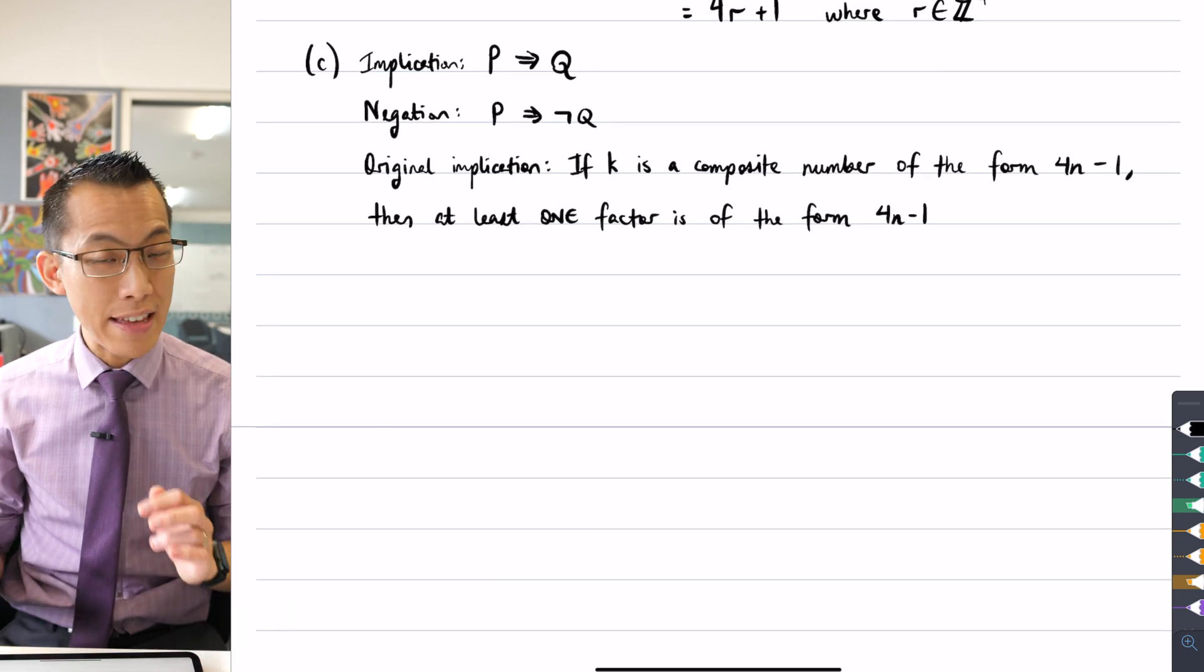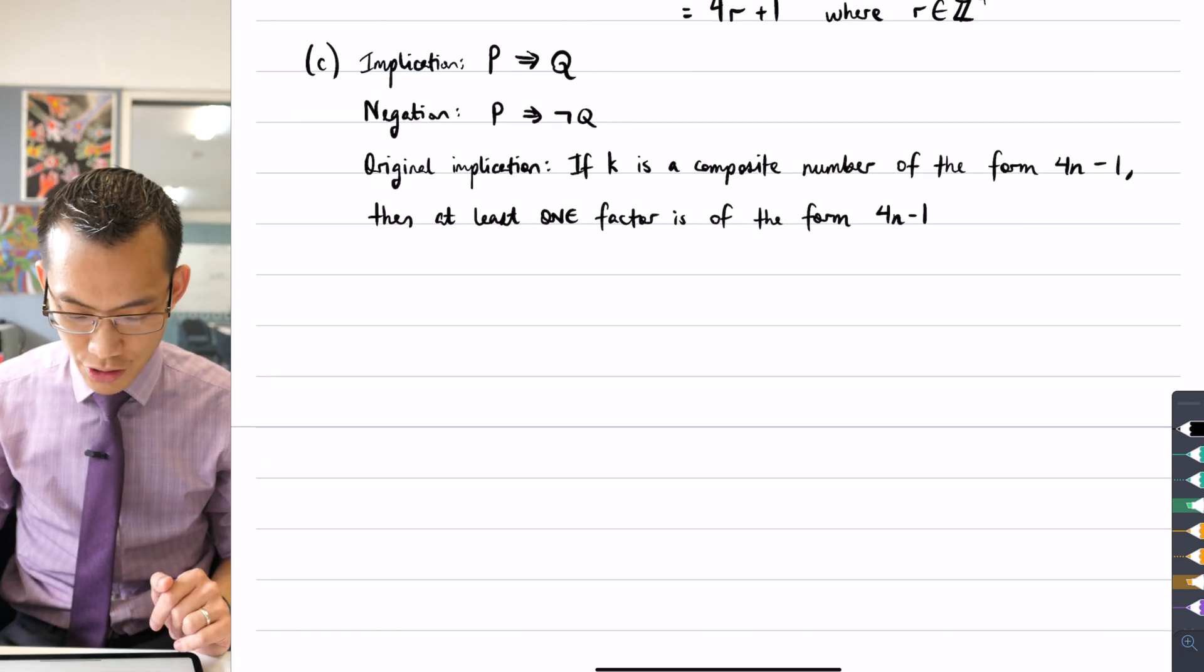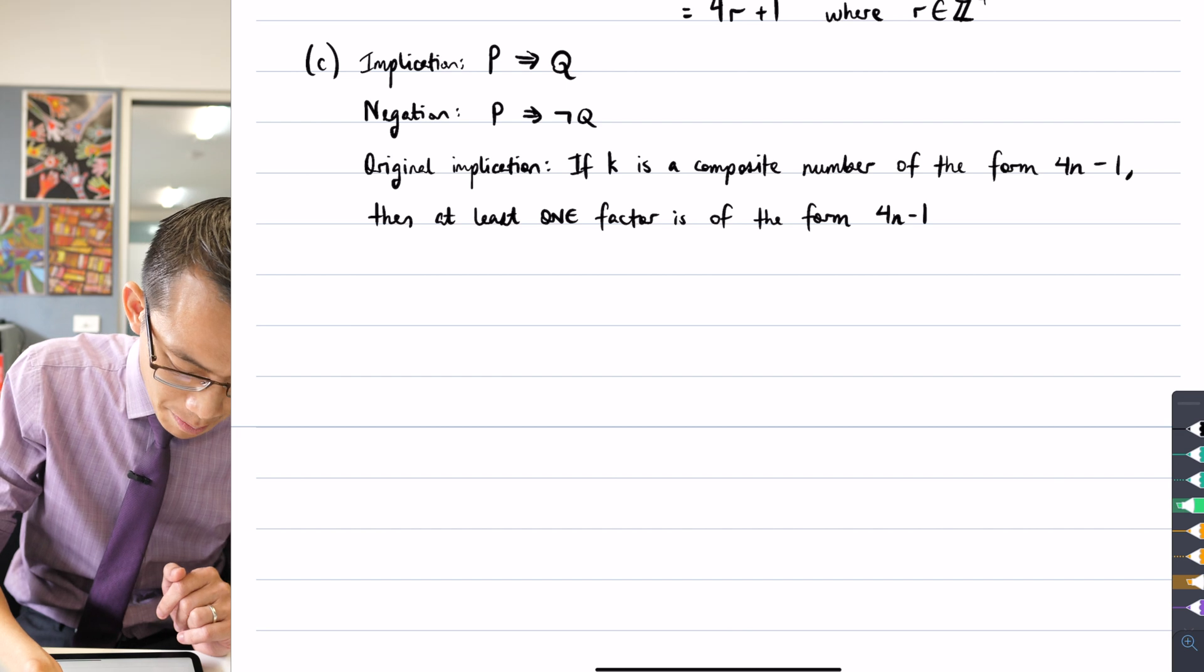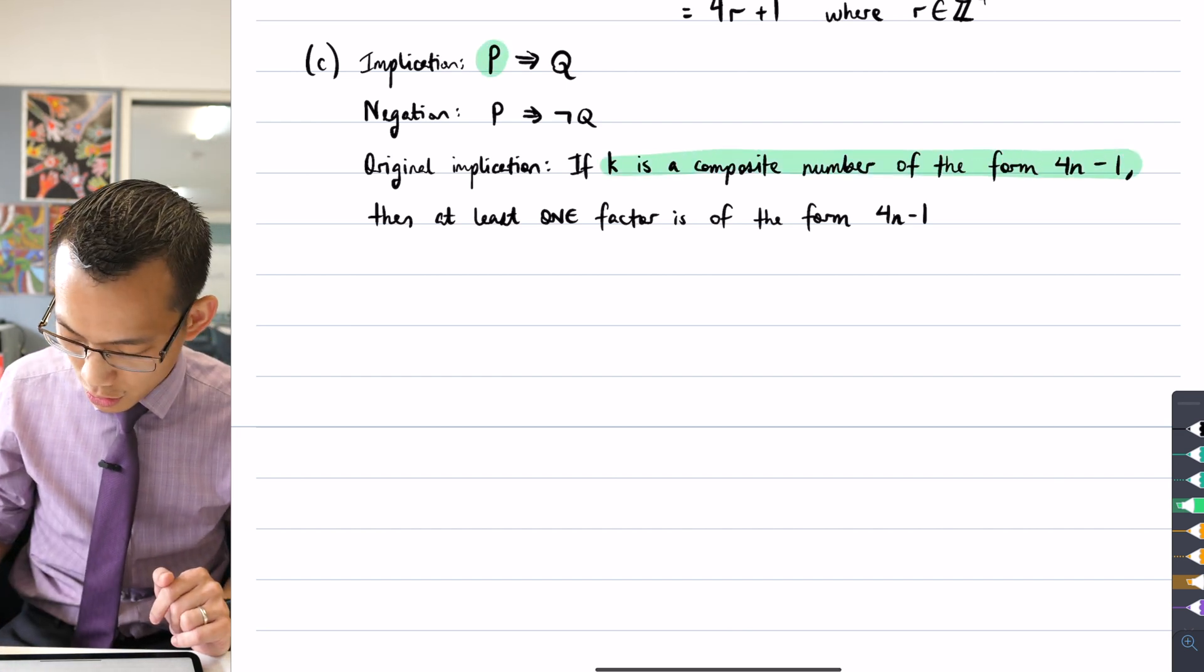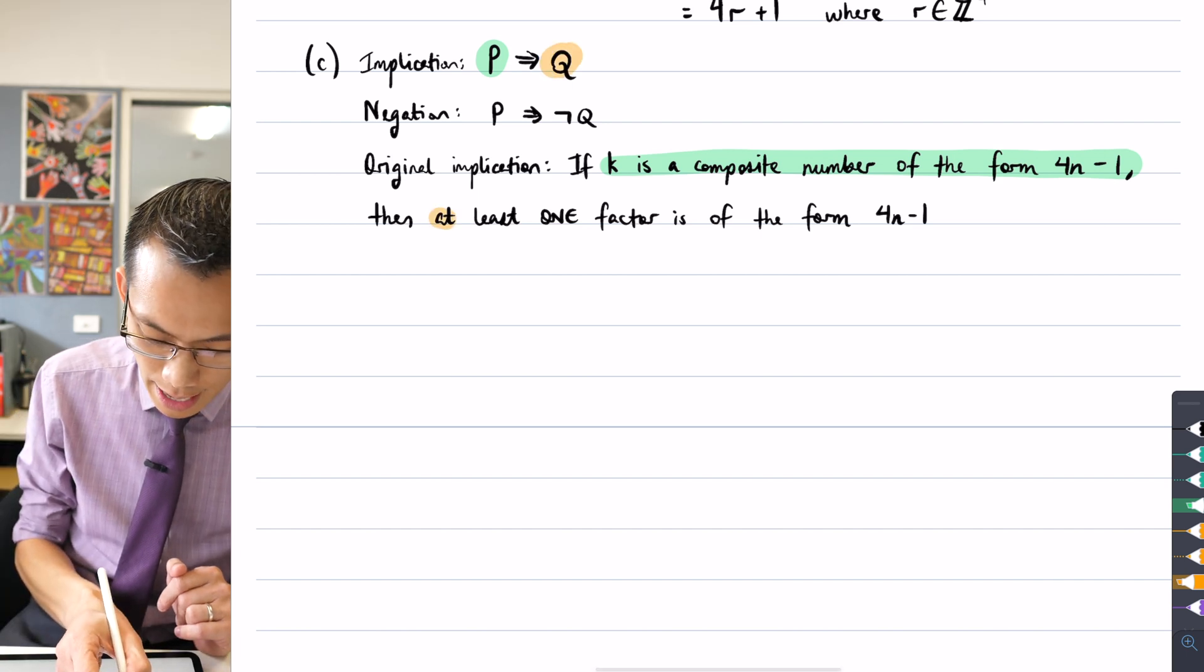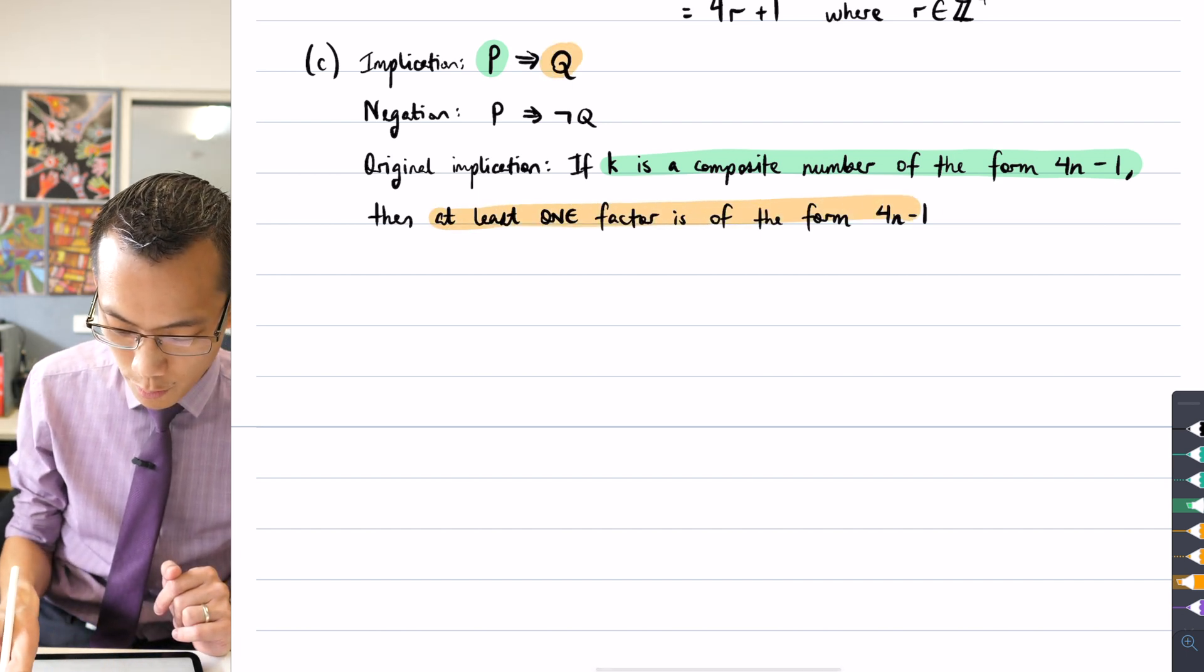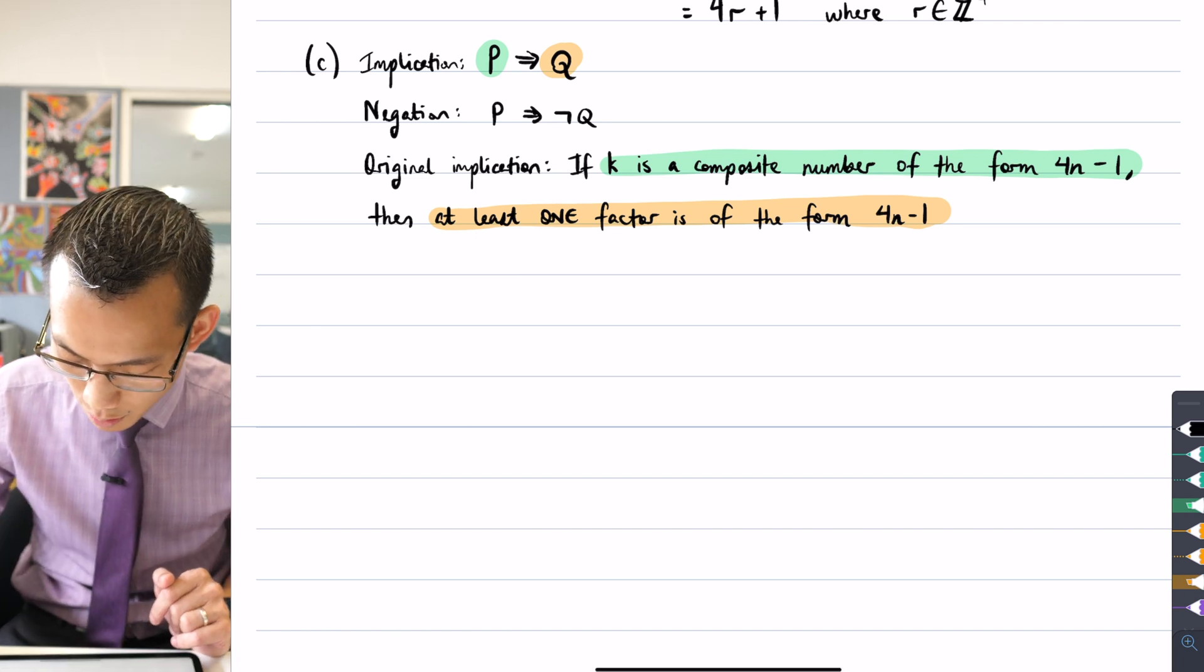Okay. Now, if that's what the implication looks like, you can see where's the p? It's here. There's p. And where's the q? The q? It's here. At least one prime factor is of the form 4n minus 1. I should put a full stop there.